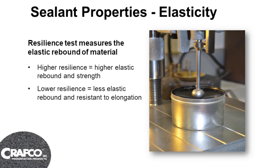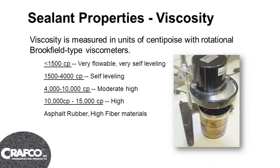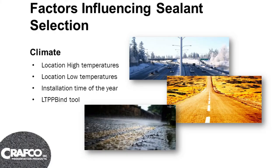Elasticity is a test that measures the rebound and resiliency of a sealant. Viscosity is measured by a machine that tells you how thick or viscous the material is. We make materials of different viscosities for different applications — like for slopes, so the material doesn't just run out of the crack.